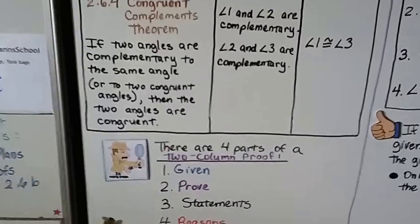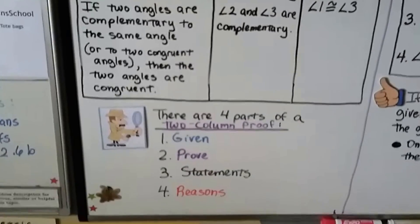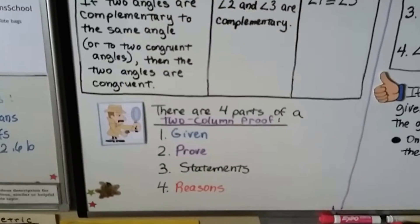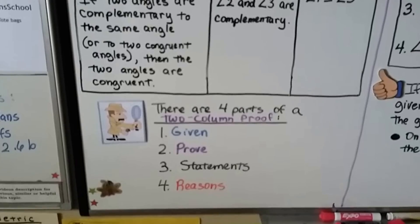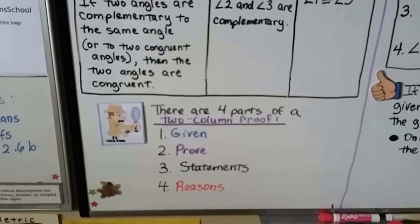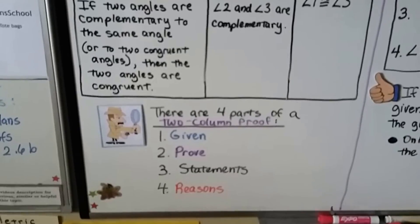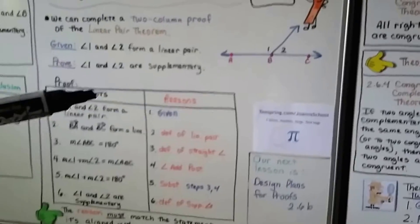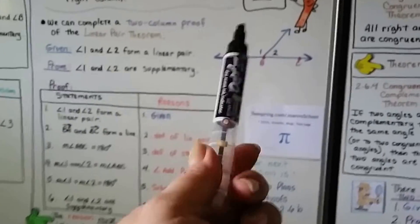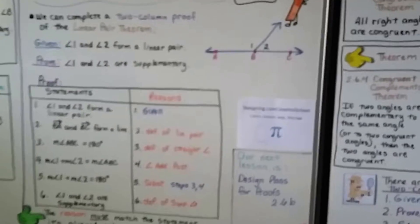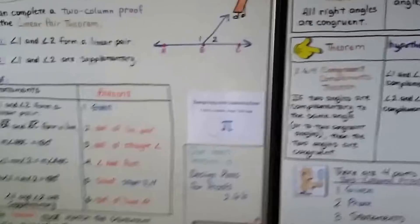There are four parts of a two-column proof — actually five if you count the diagram. We've got our given, our prove, our statements, and our reasons. But we also have a diagram.